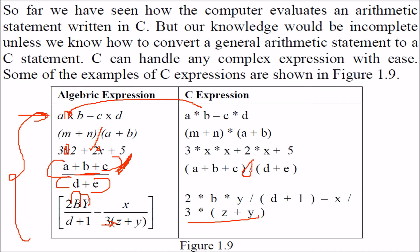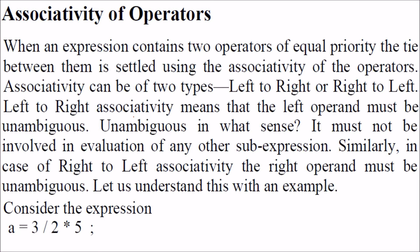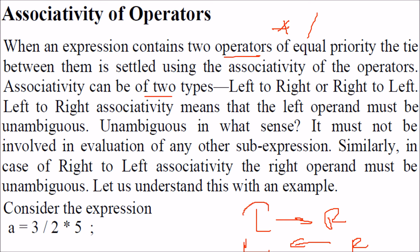Associativity of operators: when an expression contains two operations with equal priority, such as multiplication (*) and division (/), there is a tie. To resolve it, we use associativity - either left-to-right or right-to-left. Left-to-right associativity means the left operand must be unambiguous, meaning it should be a single value and not part of any sub-expression.